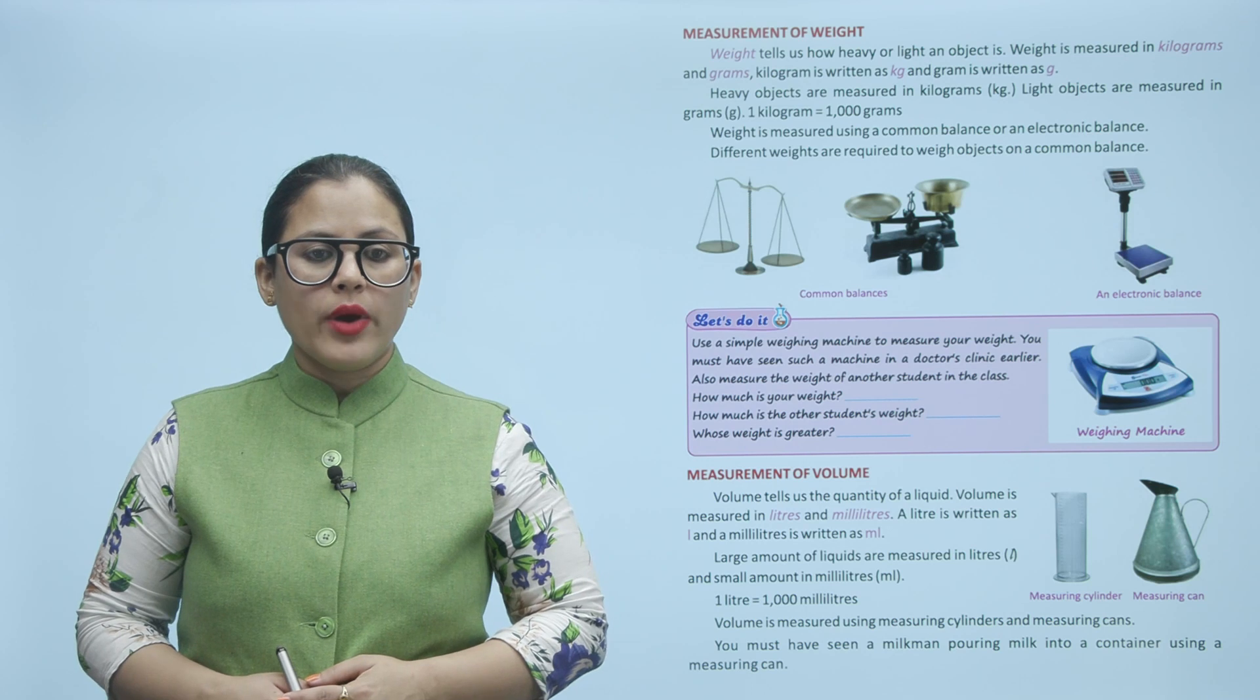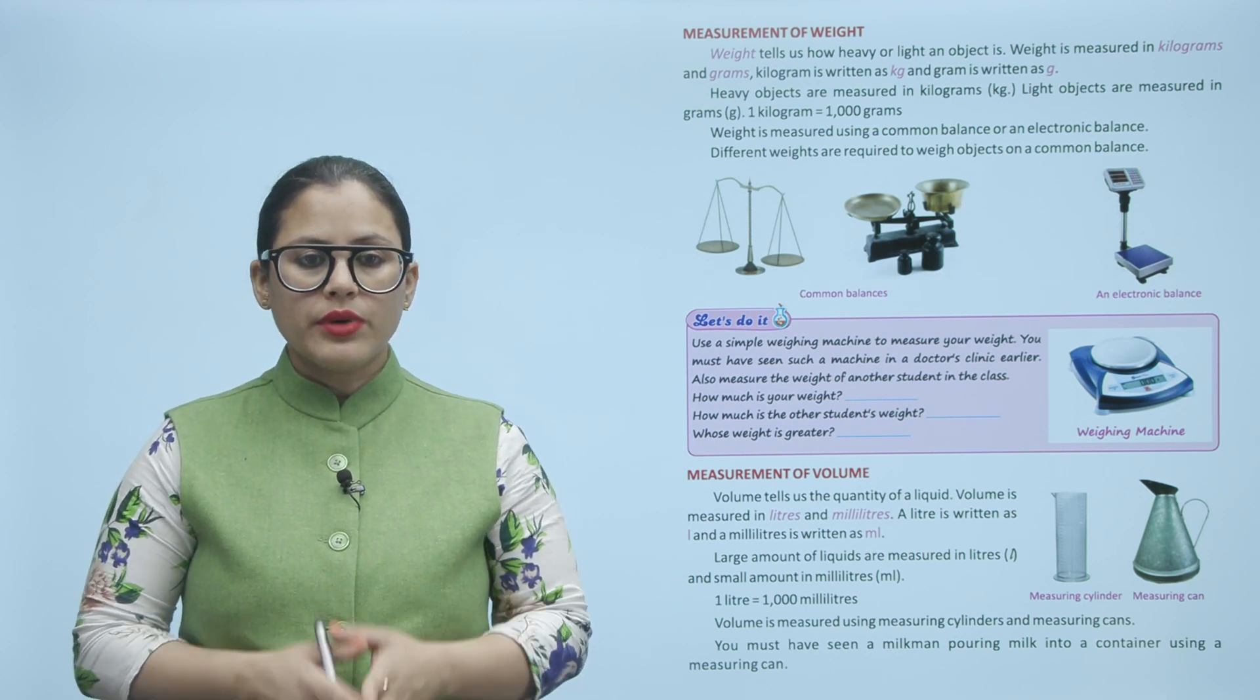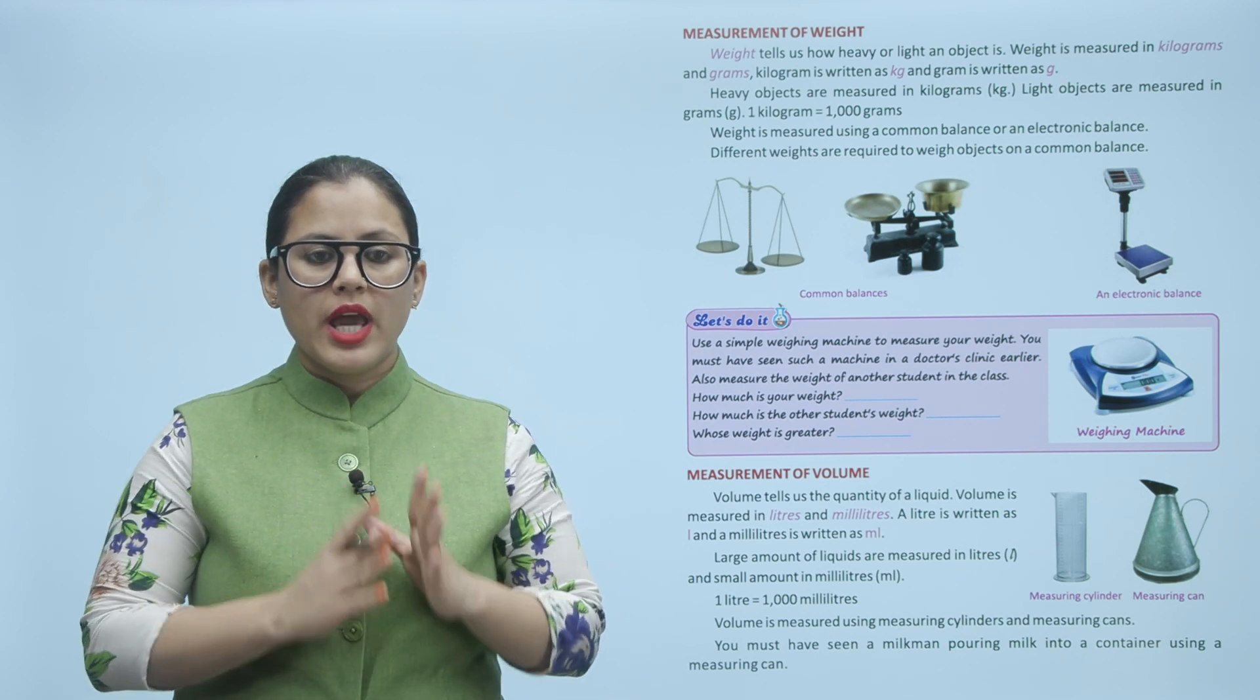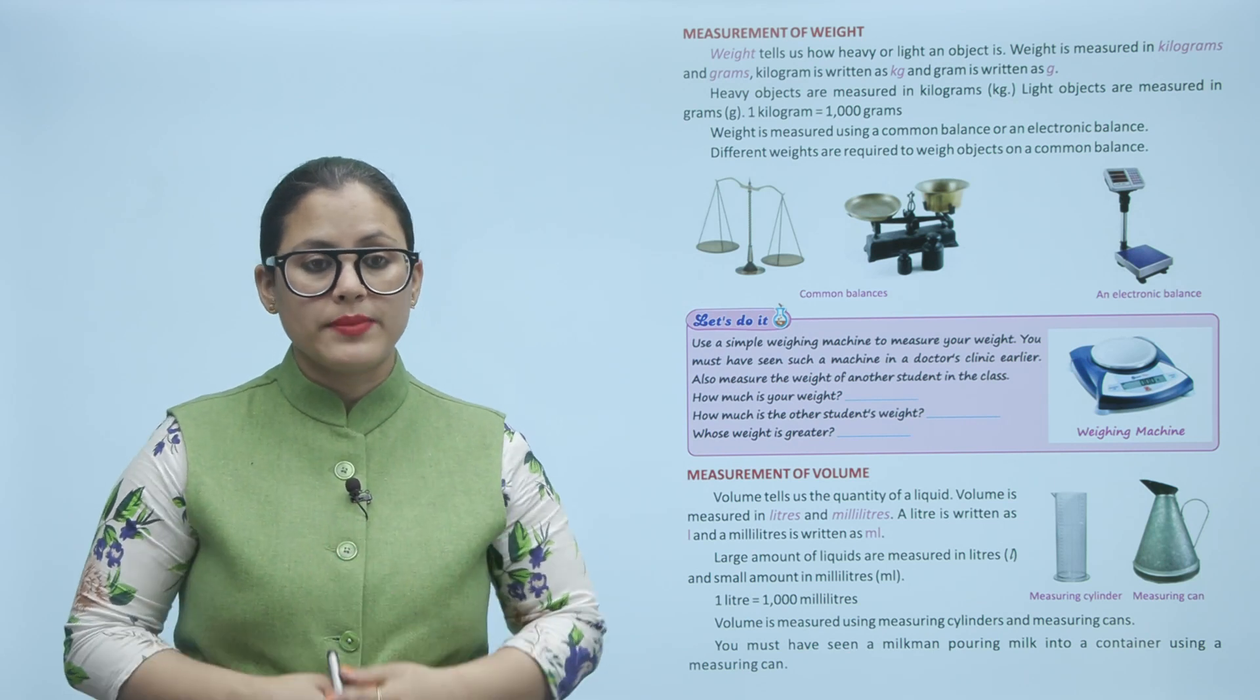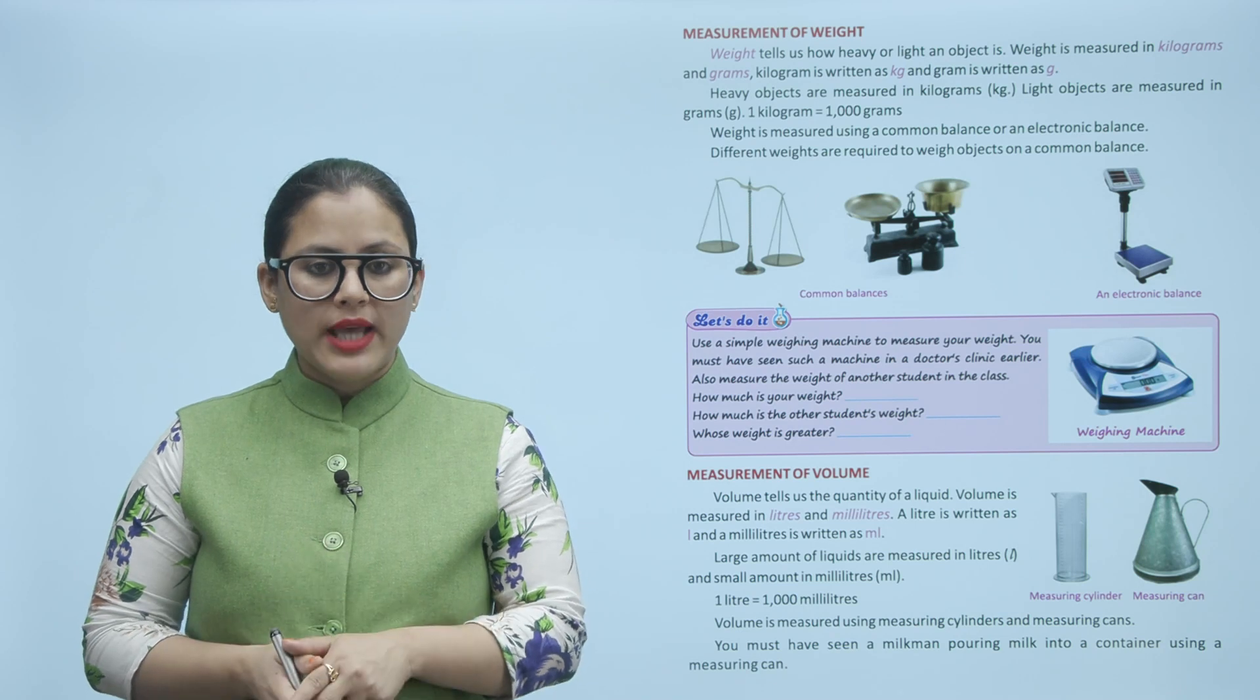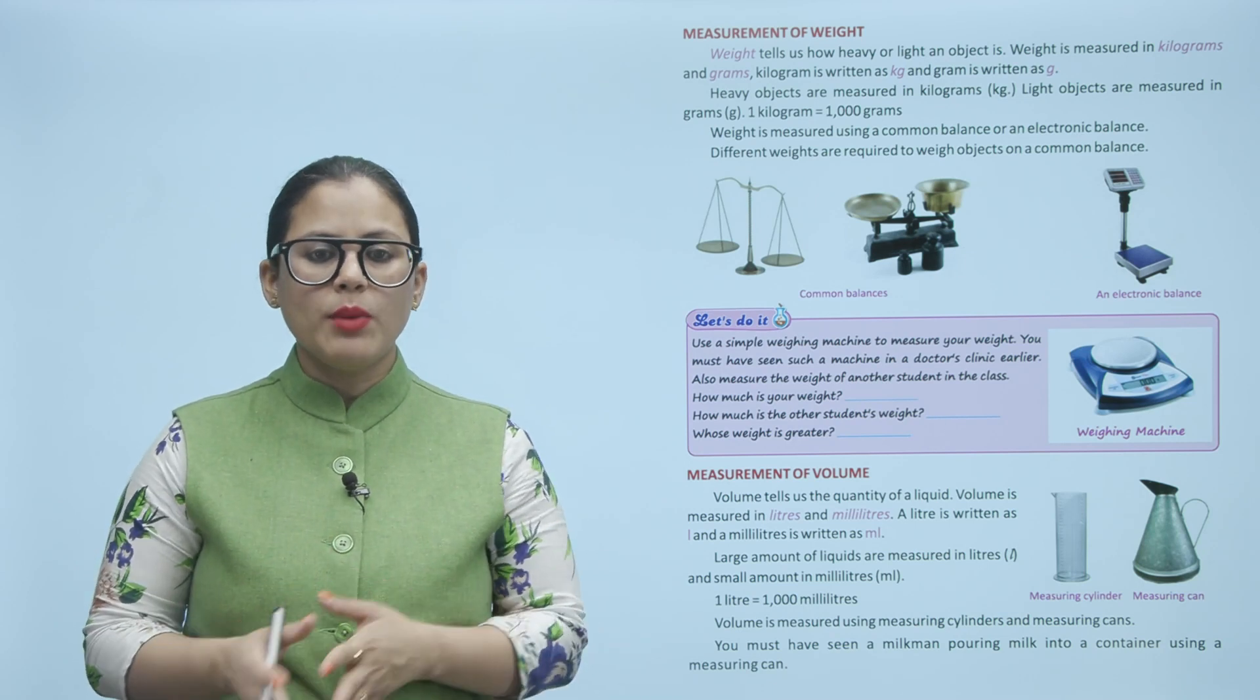Measurement of weight. Weight tells us how heavy or light an object is. Weight is measured in kilograms and grams. Kilogram is written as kg and gram is written as g. Heavy objects are measured in kilograms but light objects are measured in grams. 1 kilogram equals 1000 grams. Weight is measured using a common balance or an electronic balance. Different weights are required to weigh objects on a common balance.